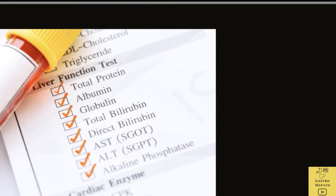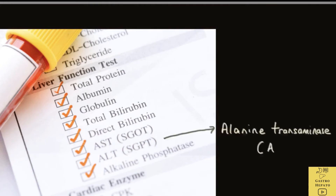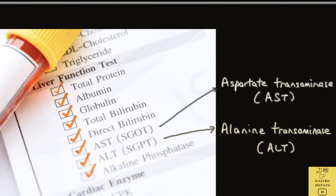In hepatitis, there are two liver enzymes that are typically elevated: alanine transaminase or ALT, and aspartate transaminase or AST. These enzymes are normally contained within the liver cells. If injured, the liver cells spill these enzymes into the blood, raising the enzyme levels in the blood.